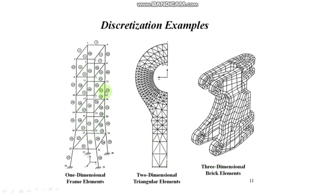First is the example of a tower. For analysis purposes, we use one-dimensional element. The numbering in the circle indicates the number of elements and the numbering without circle indicates the number of nodes. For the tower, we use one-dimensional line element for analysis. Second, this is a figure of a plate, just like a spanner. We use triangular two-dimensional elements for the analysis.